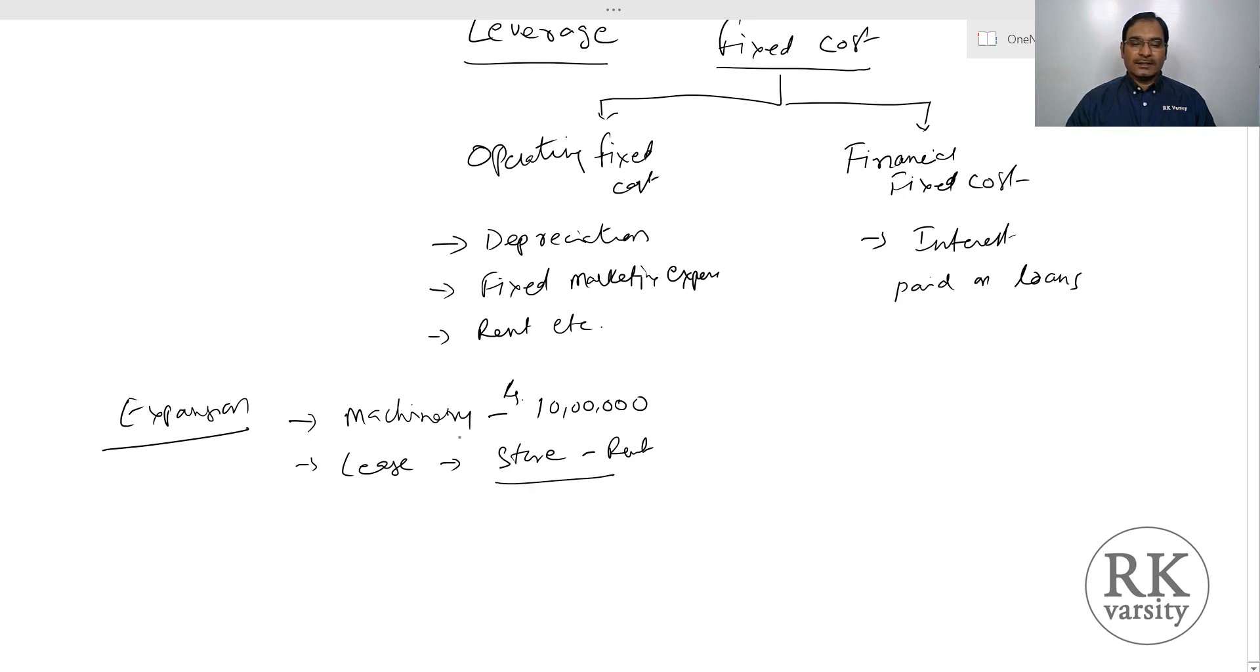In the sense, in case of machinery, if the expected life of machinery is 10 years, then yearly you will have a depreciation of Rs. 1 lakh, and then if the lease rental is another Rs. 1 lakh 20,000, so these two are fixed operating costs for the organization.